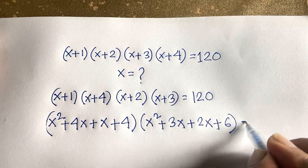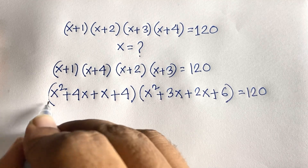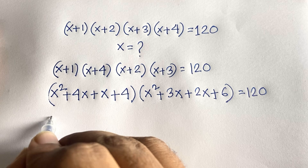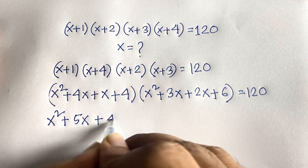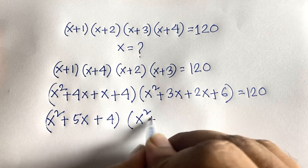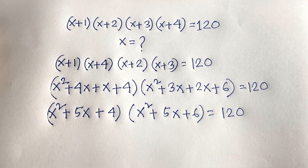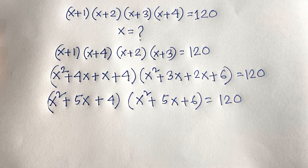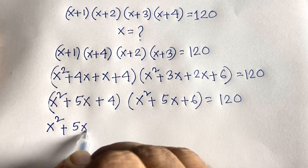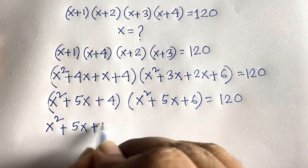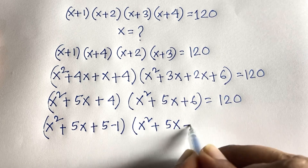At this moment this equation becomes (x² + 5x + 4)(x² + 5x + 6) = 120. Now I notice that 4 can be written as 5 minus 1, and 6 can be written as 5 plus 1. So the equation becomes (x² + 5x + 5 - 1)(x² + 5x + 5 + 1) = 120.